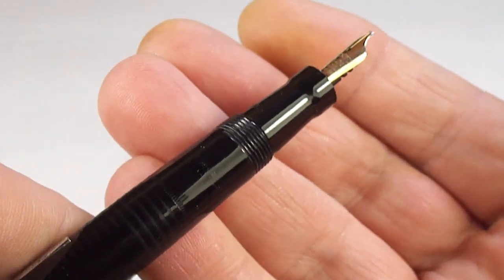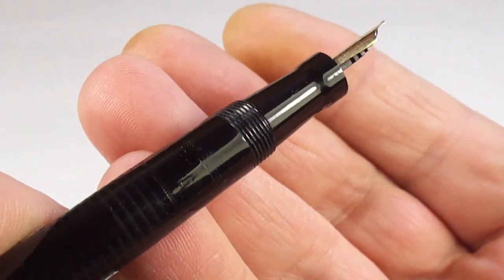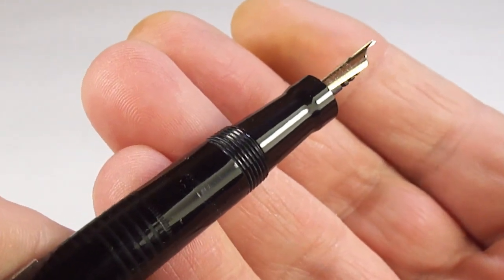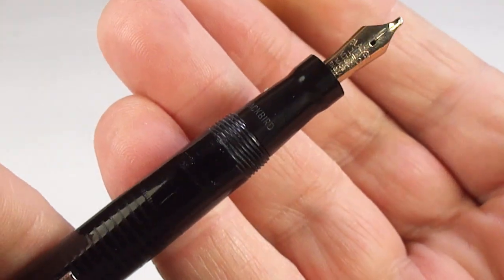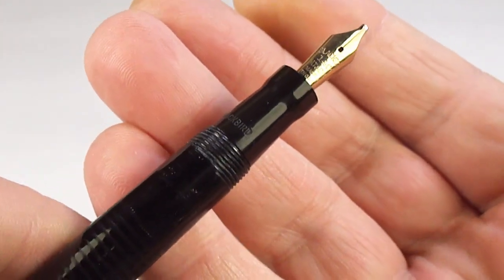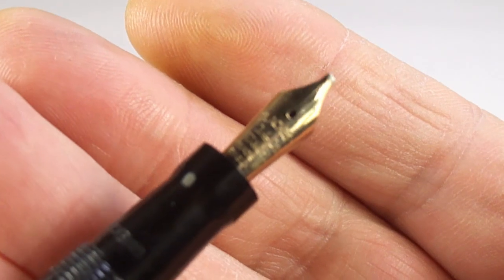Now, the thing, well, this section you can see is a standard Swan Blackbird section. But the thing that caught the eye of the customer is this.